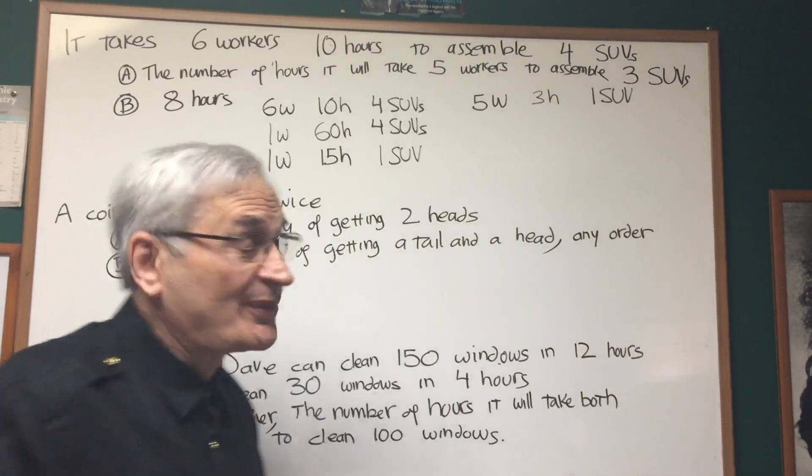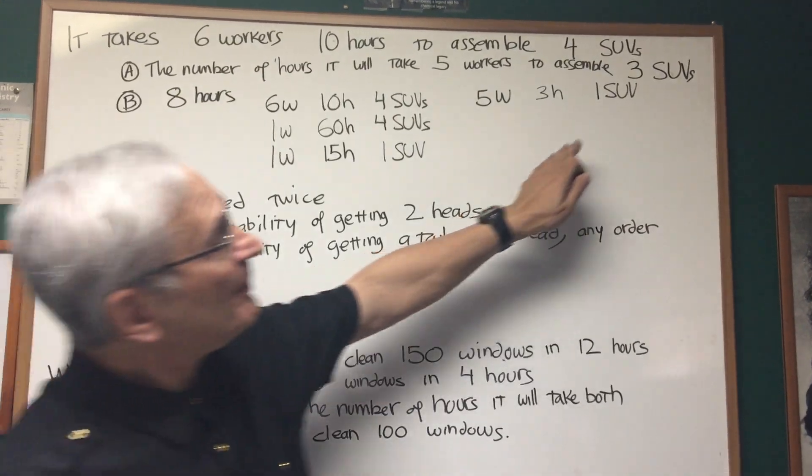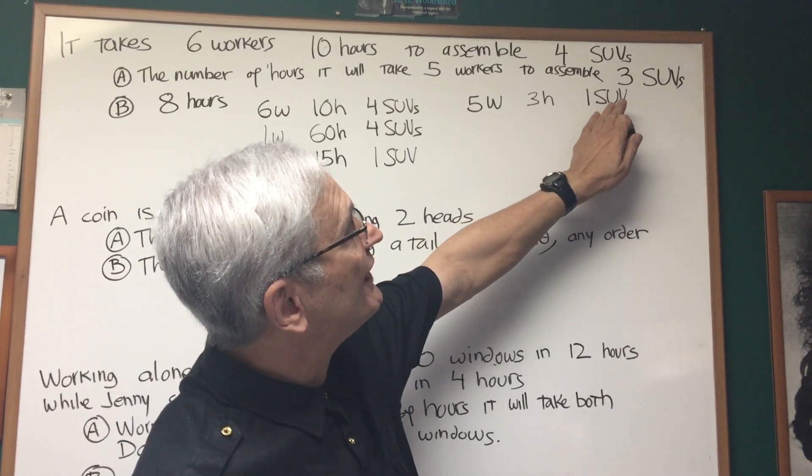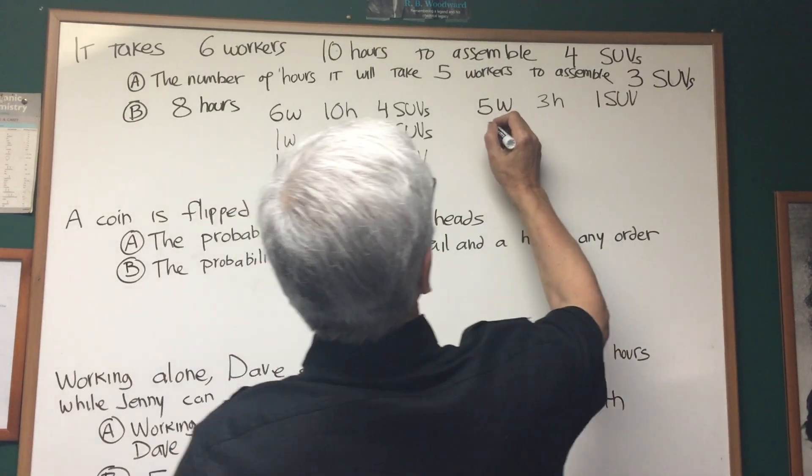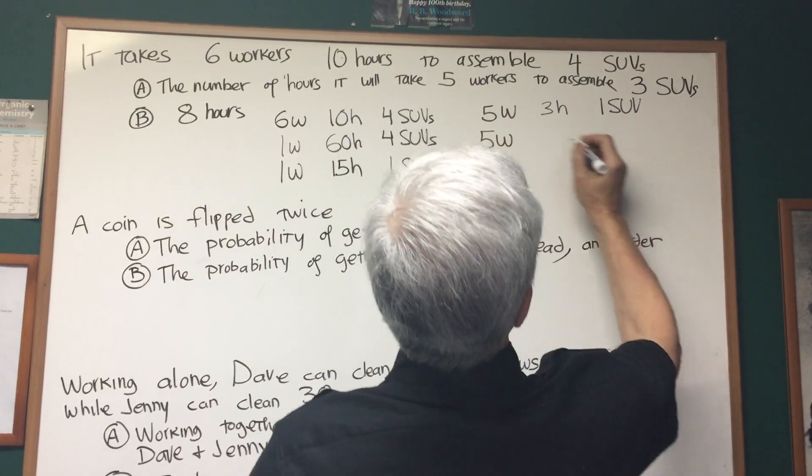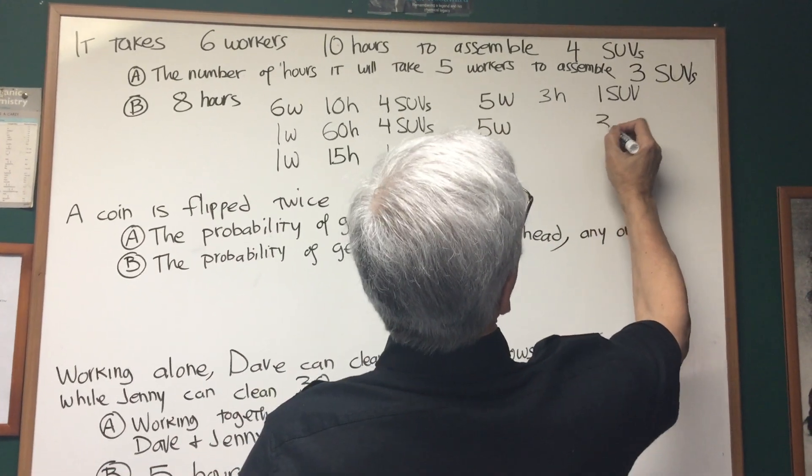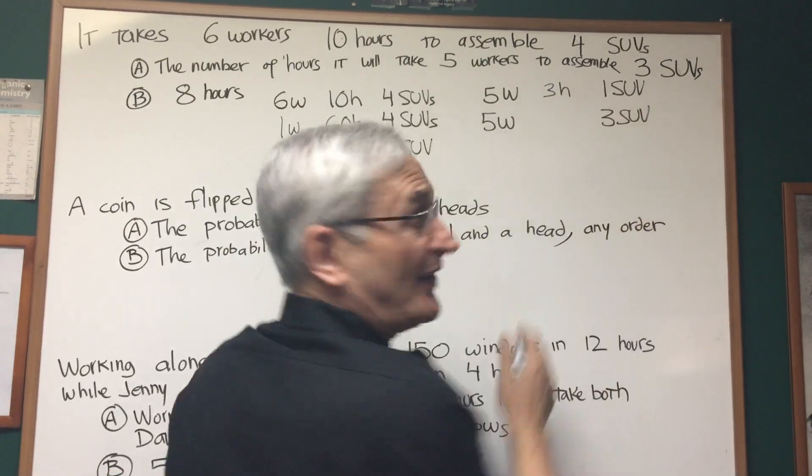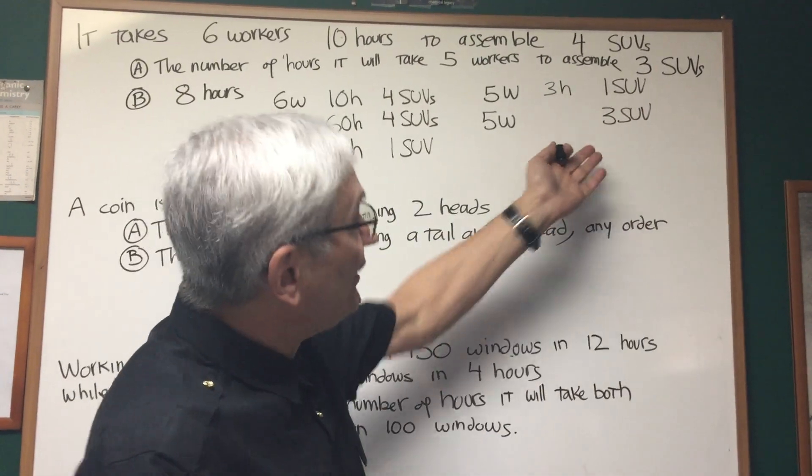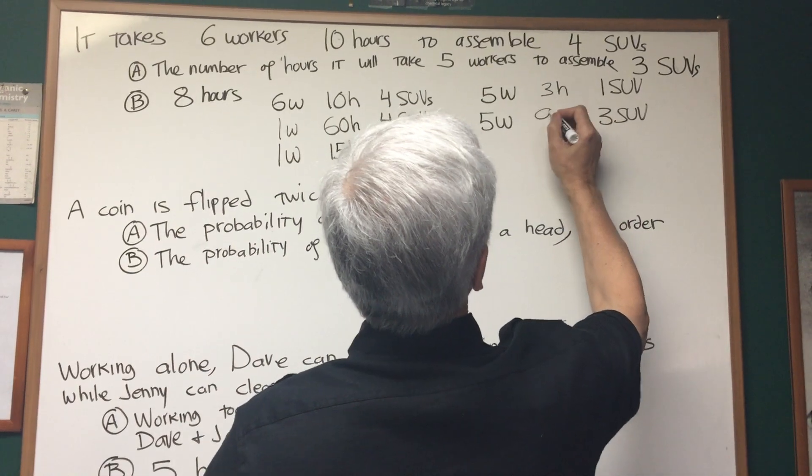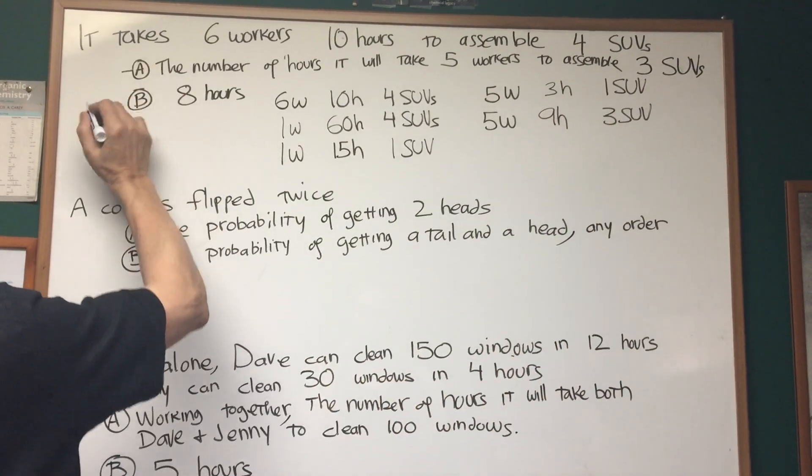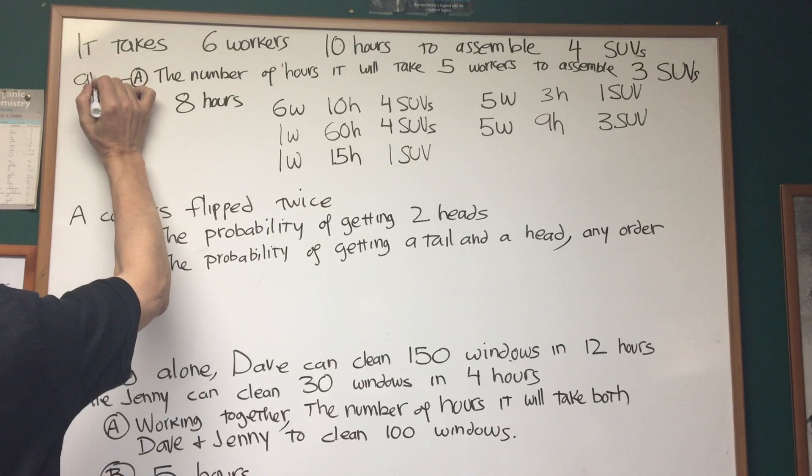Okay, I hope that makes sense. And now we want to find out how long it will take them to make three SUVs. Well, if it takes five workers three hours to make one SUV, they have to do three times as much work to make three SUVs, so three times three hours is nine hours. So, the value for A is nine hours, the value for B is eight hours.